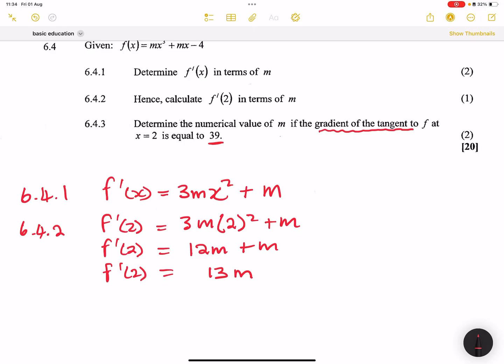They said to us the gradient of the tangent, which means that the gradient of the tangent is equal to the derivative of this graph at the point x equals 2. But isn't that what we did over here? So they say to us this is equal to 39.